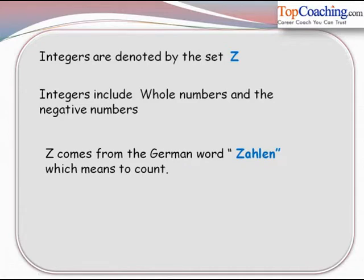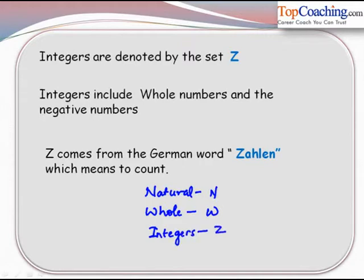So we can say that the natural numbers are denoted by N, whole numbers are denoted by W, and the integers are denoted by Z.